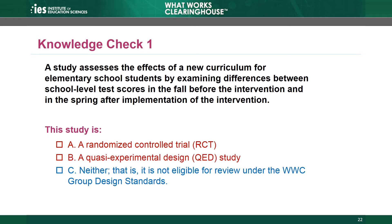There is only one group in the study. The study examines scores of the group in the fall and the scores of the same group in the spring. Without a comparison group, we worry that normal maturation in the students might affect the results — students know more as they get older and learn more. Without a comparison group, we can't tell whether the intervention is truly causing students' test scores to improve. Choice A is incorrect because there was no random assignment. Choice B is incorrect because eligible QEDs require at least two distinct groups.